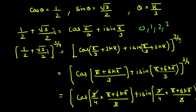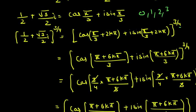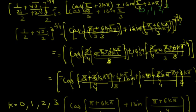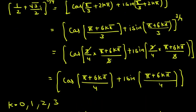Applying De Moivre's theorem, we bring the exponent down. Before doing that, we simplify the angle to get (π + 6kπ)/3. Bringing the 3/4 down and cancelling the 3, we are left with cos((π + 6kπ)/4) + i sin((π + 6kπ)/4).